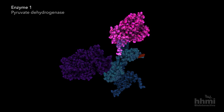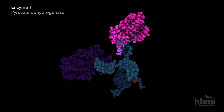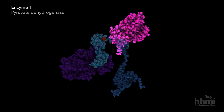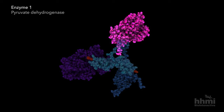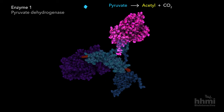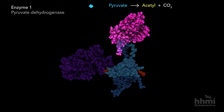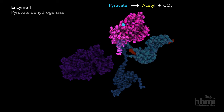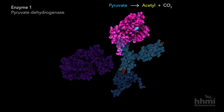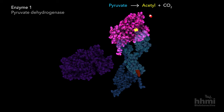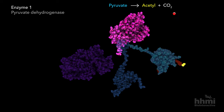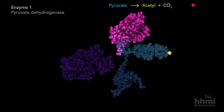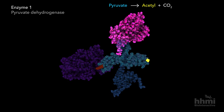The first enzyme catalyzes decarboxylation, transforming 3-carbon pyruvate into a 2-carbon acetyl group, generating carbon dioxide as waste.